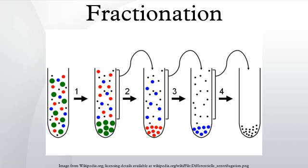The process of blood fractionation involves separation of blood into its main components. Blood fractionation refers generally to the process of separation using a centrifuge, after which three major components can be visualized: plasma, buffy coat, and erythrocytes.